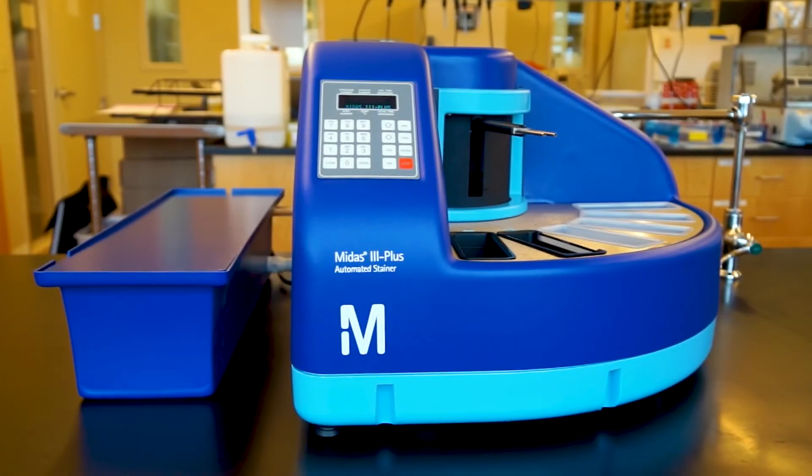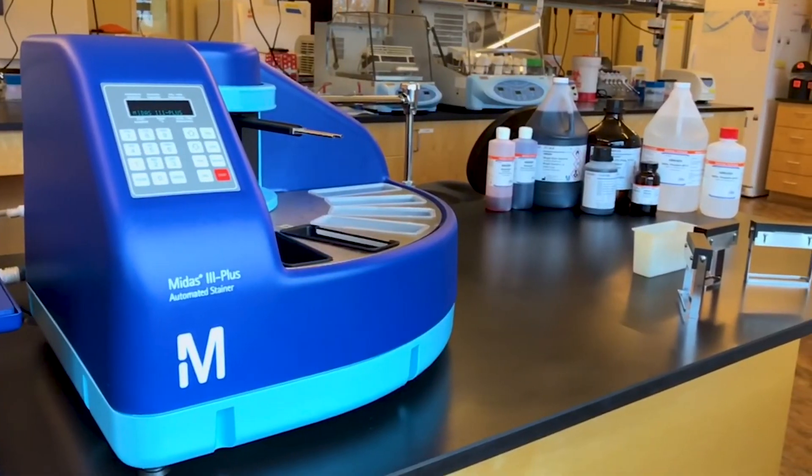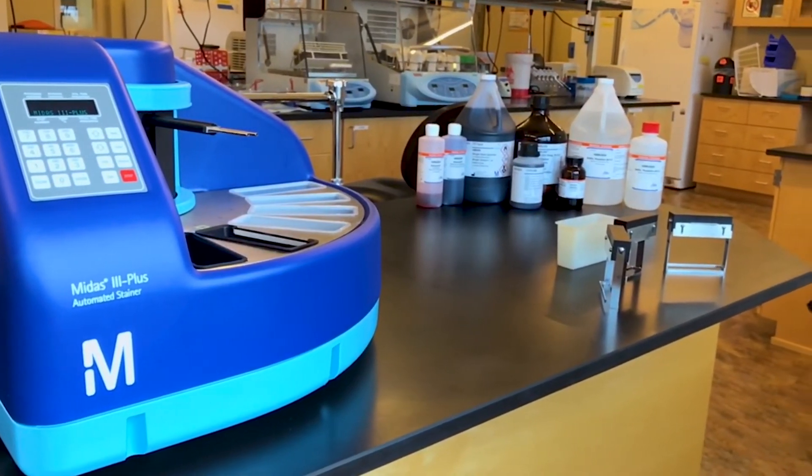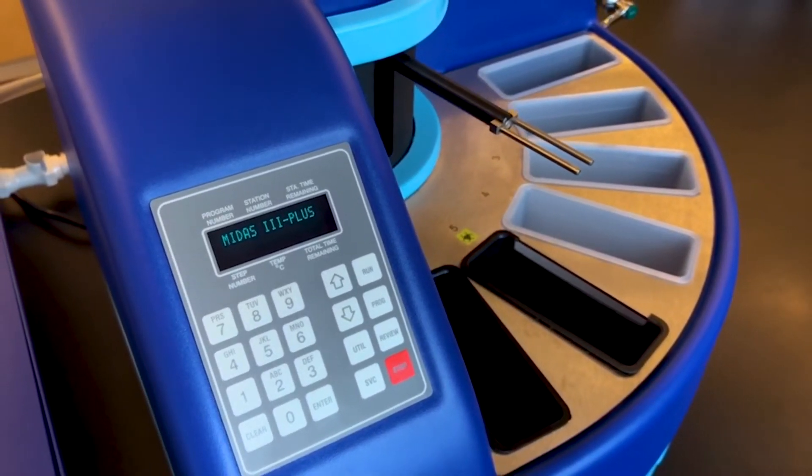The Midas 3 Plus automated stainer is compactly designed and has a small footprint. It will become the cornerstone of your laboratory. It requires only a power outlet and water supply to be fully operational in a matter of minutes.